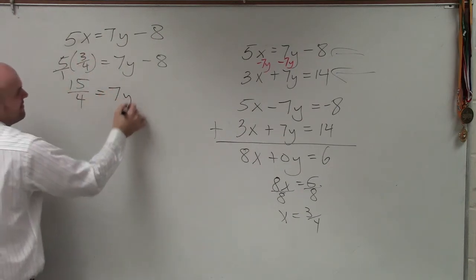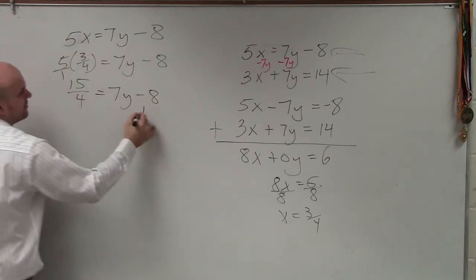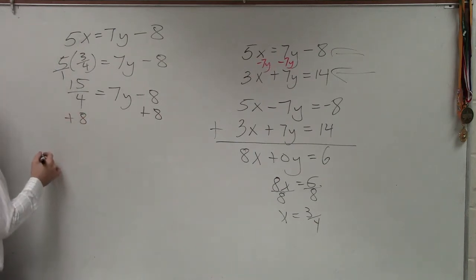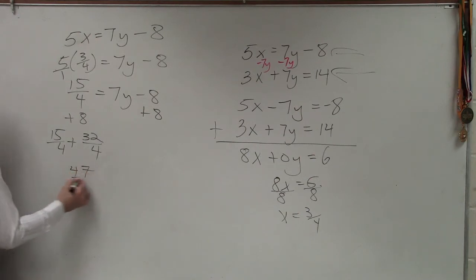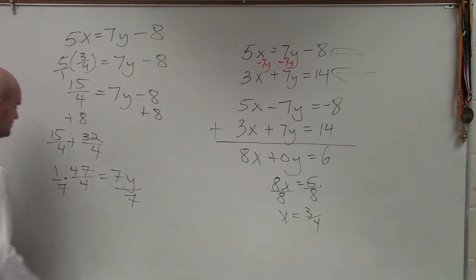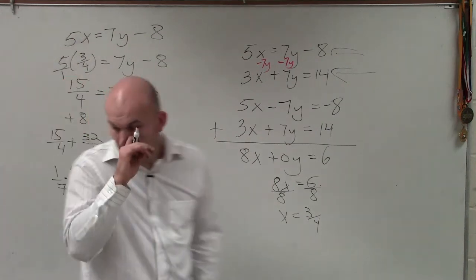This becomes 15 fourths equals 7y minus 8. Add 8 over 8. So that's going to be... It's not good. I don't know. Hey, guys.